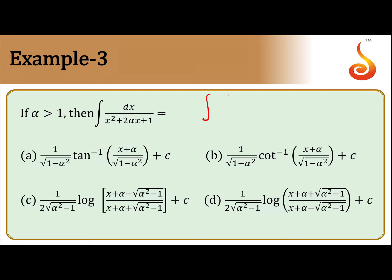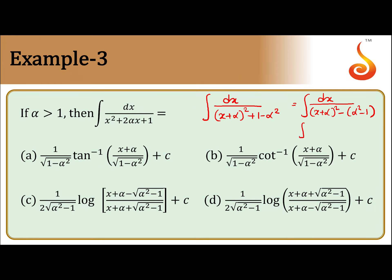The most important concept here is that alpha is greater than 1. If we complete the square, we can write dx by x plus alpha whole square minus 1 minus alpha square. But since alpha is greater than 1, this term must be negative, so we rewrite it as dx by x plus alpha whole square minus alpha square minus 1.